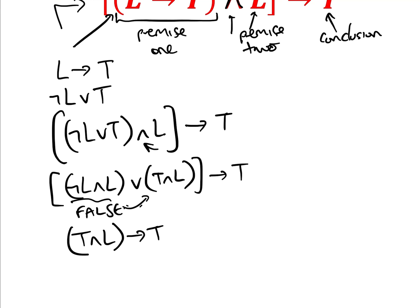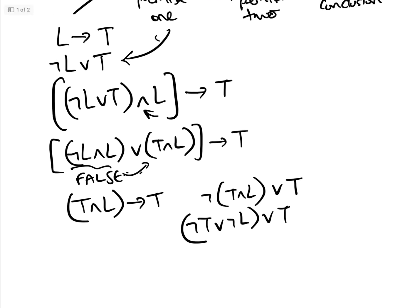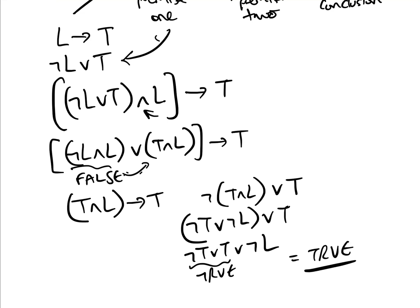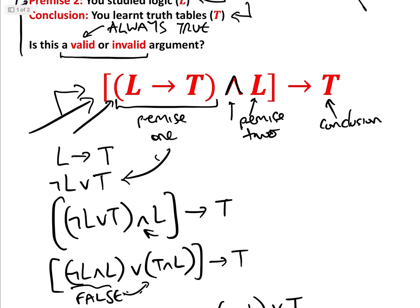Now, we're going to again use the implication law to rewrite that as not T and L or T, exactly the same as before. Then by De Morgan, we can expand to get not T or not L or T. By the associative law, we can write that as not T or T or not L. And not T or T is clearly always true — it's always got to be either T or not T. True or anything is still equal to true. Therefore, for any values of T or L, this statement is always true, and therefore the conclusion is a valid argument.